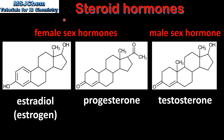Next we look at steroid hormones. Here we have the female sex hormones which are estradiol or estrogen and progesterone. On the right we have the male sex hormone which is testosterone. As you can see, all the sex hormones have the 4 fused hydrocarbon ring structure which is the steroidal backbone.